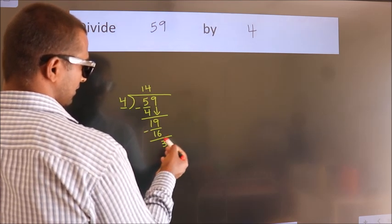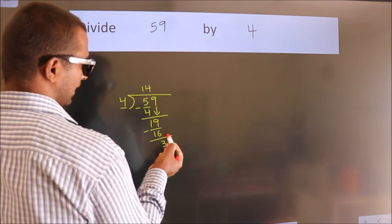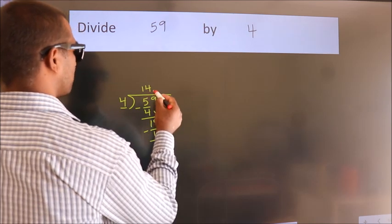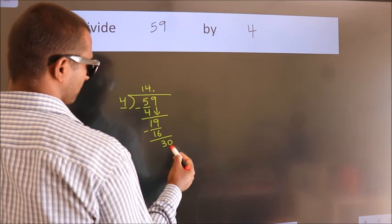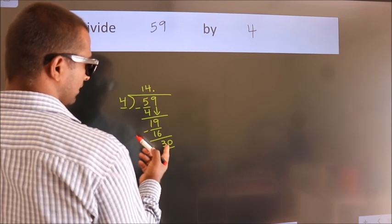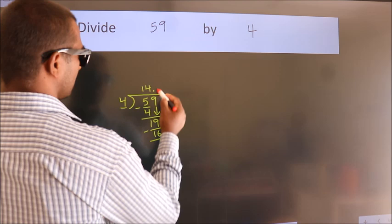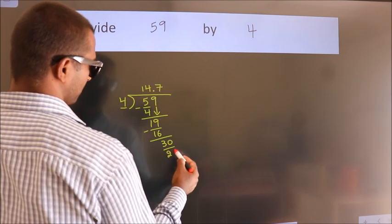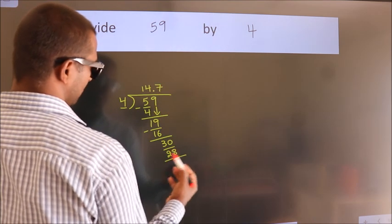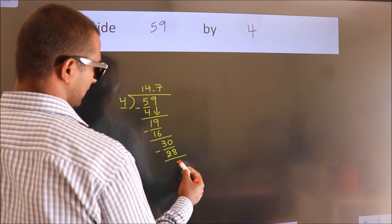After this, no more numbers to bring it down. So what we do is, we put dot take 0. So 30. A number close to 30 in 4 table is 4 sevens, 28. Now we subtract. We get 2.